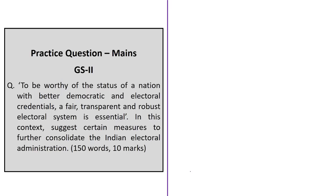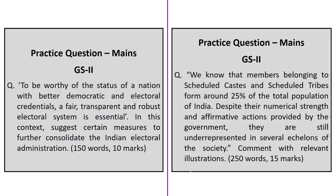Now see these mains questions. First: 'To be worthy of the status of a nation with better democratic and electoral credentials, a fair, transparent, and robust electoral system is essential. In this context, suggest certain measures to further consolidate the Indian electoral administration.' Second, from GS2: 'Members belonging to Scheduled Castes and Scheduled Tribes form around 25% of the total population of India. Despite their numerical strength and affirmative actions provided by the government, they are still underrepresented in several echelons of the society. Comment with relevant illustrations.' You can write answers, take a photograph or convert into PDF, and upload to your drive and share the link in the comment section so that we can provide feedback within a reasonable time frame.